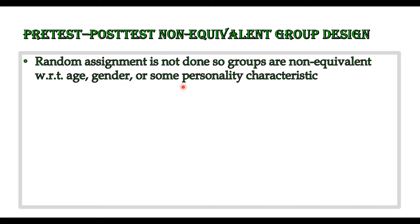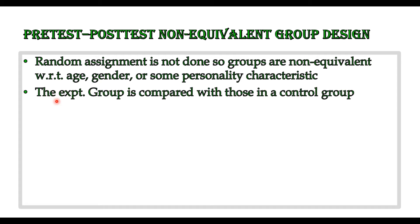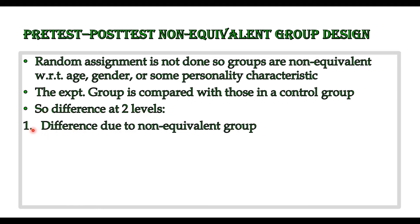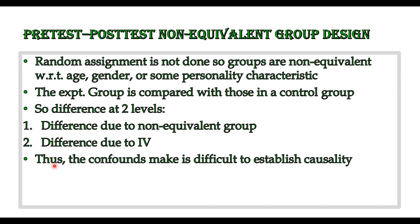The normal way of performing the experiment is that the experimental group is compared with those in the control group. It is important to account for two kinds of differences that arise: first, the difference due to the non-equivalent groups, because the groups are pre-existing and therefore not equal; and second, the difference due to introducing the independent variable in the experimental group. Because of these two differences, it is difficult to establish causality in quasi-experimental design.